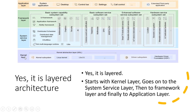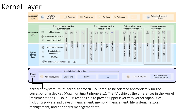We have got four layers: kernel layer, system service layer, framework layer, and application layer. It is clearly structured and layered. It starts with the kernel layer and ends with the application layer, and each of them has a specific function. The kernel layer has two parts: kernel subsystem and driver subsystem.